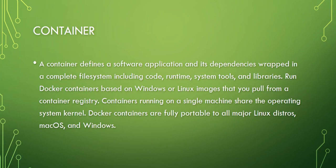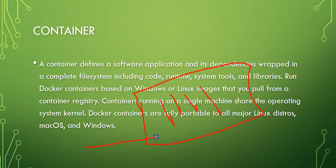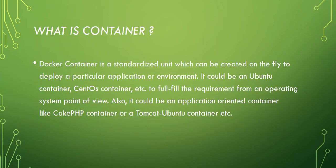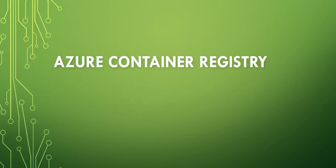A container defines a software application and its dependencies. Remember the analogy — the container holds all the goods coming from one location to another. In our case, those goods are the code, runtime, system tools, and libraries. You run Docker containers based on Windows or Linux images that you pull from a container registry. That brings us to the end of this introductory section.